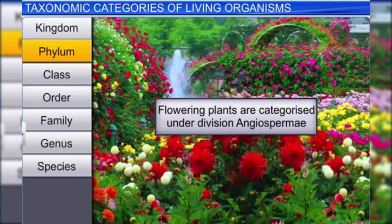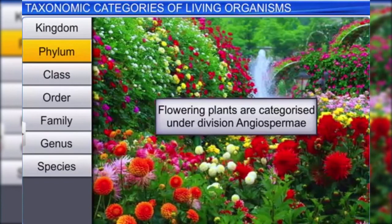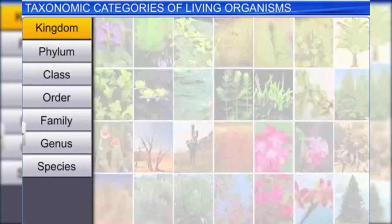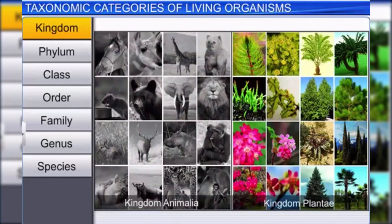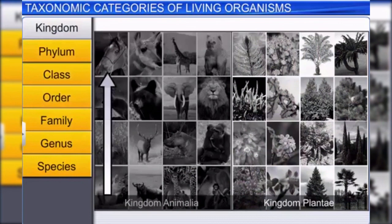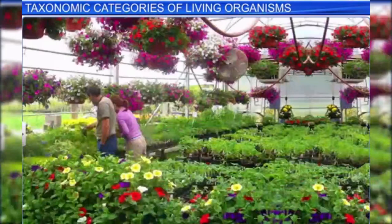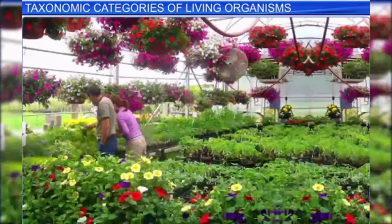All flowering plants are categorized under division Angiospermae or Magnoliophyta. The highest taxonomic category is kingdom — all animals are put under kingdom Animalia and all plants fall under kingdom Plantae. As we go higher from species to kingdom, the number of common characters decreases. By observing the characteristic features of individual organisms, taxonomists have classified living organisms into different taxonomic categories.